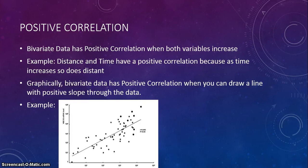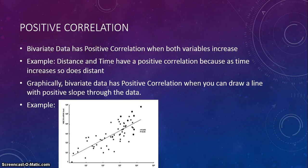Positive correlation: bivariate data has positive correlation when both variables increase. Positive correlation is like positive slope. For example, distance and time have a positive correlation because as time increases, so does your distance. Graphically, bivariate data has positive correlation when you can draw a line with positive slope through the data, like our graph here.